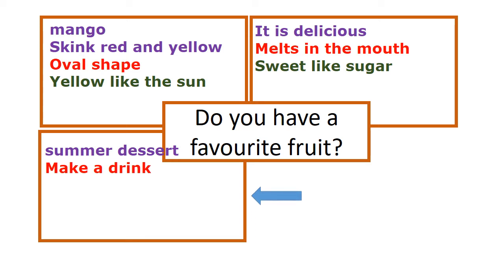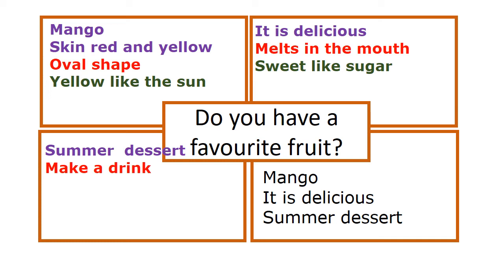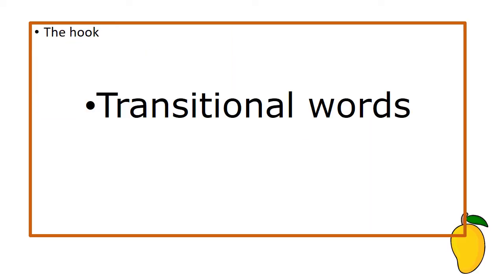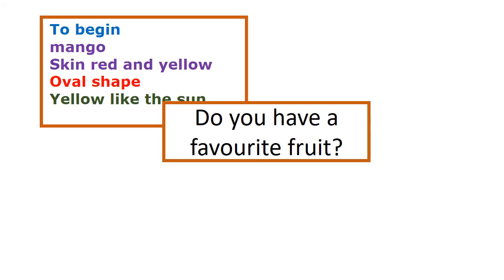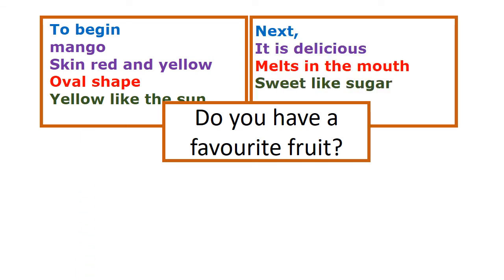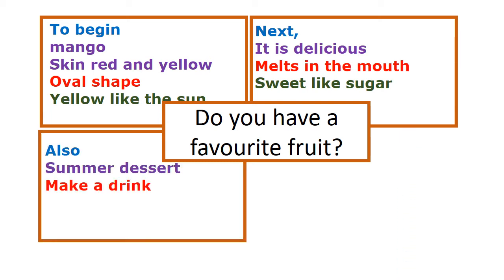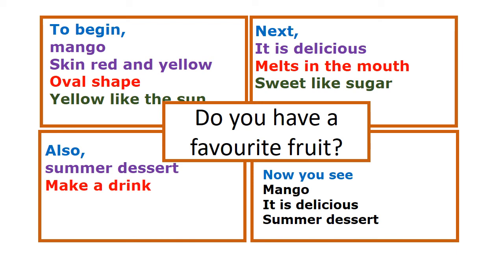In our last square, remember, we do not add any new information. Now, we have to use our transitional words. Do you remember what transitional words are and the purpose for them? Transitional words help to make our writing flow smoothly. Let's look at what transitional words were used: the first one is 'to begin,' the second one is 'next,' the third one is 'also,' and the fourth one is 'now you see.'